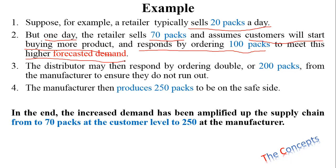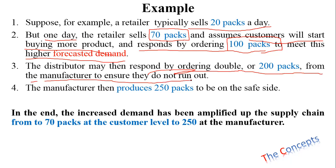What is happening here is that the retailer is thinking that because 70 packs were sold in a day, in the coming days the retailer is still going to sell 70 packs — forecasting that demand has gone up. So in order to handle this forecasted sale, the retailer orders 100 packs from the distributor. When the distributor gets a demand of 100 packs, the distributor thinks demand has increased and therefore orders 200 packs from the manufacturer.